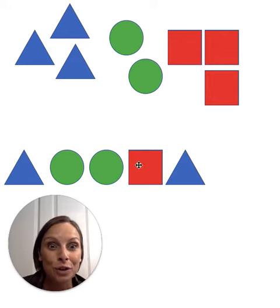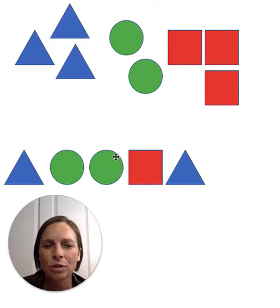Triangle, circle, circle, square, triangle. If it goes in a pattern, you probably should see what goes after the triangle over here. Triangle, circle, circle, square, triangle.